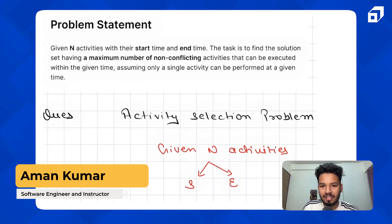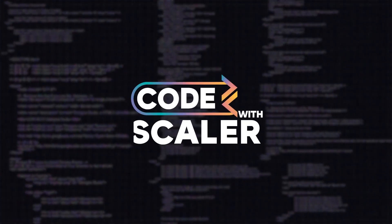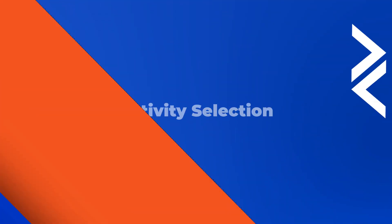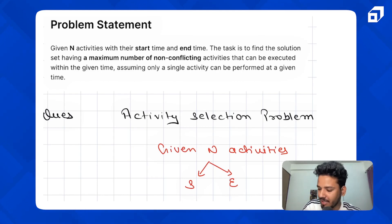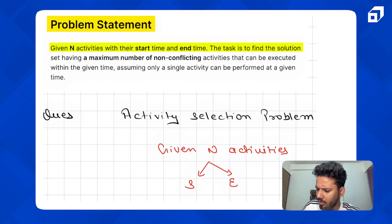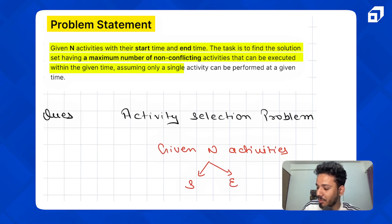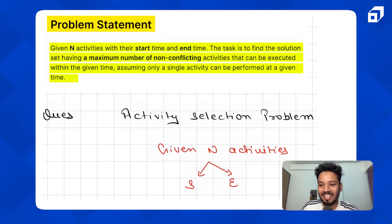Hello everyone. Today we are going to do another very standard greedy problem known as the Activity Selection Problem. The problem statement is: we are given N activities with their start and end times. The task is to find the solution set having the maximum number of non-conflicting activities that can be executed within the given time, assuming only a single activity can be performed at a given time.